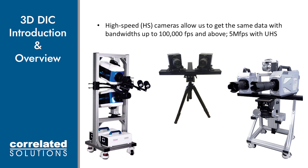Obviously these cameras are more useful for very fast tests. They're typically much heavier, larger, and require more robust mounting solutions. They're also more expensive. While high-speed cameras can currently capture useful data up to about 100,000 frames a second, ultra-high-speed cameras currently capture useful datasets up to about 5 million frames per second.